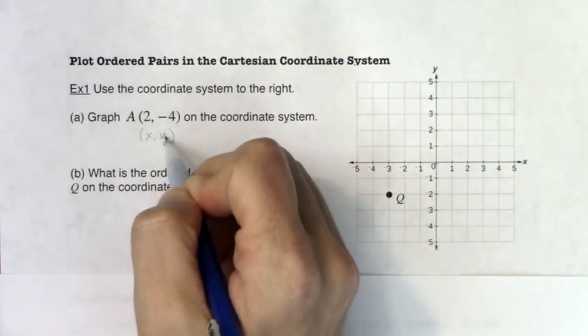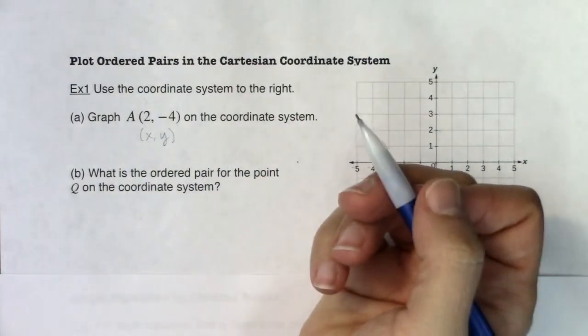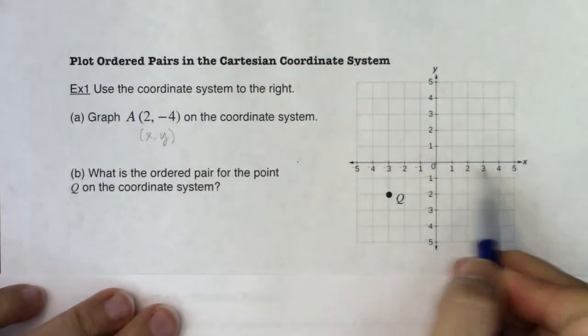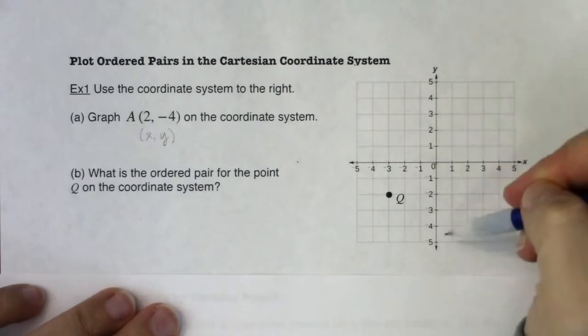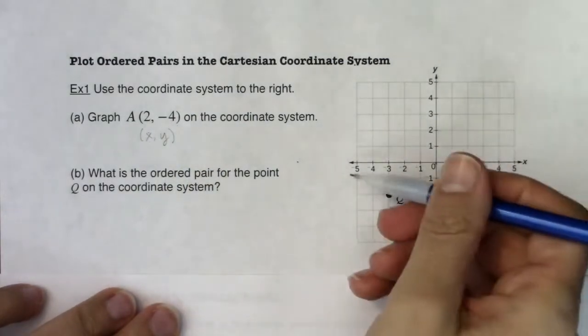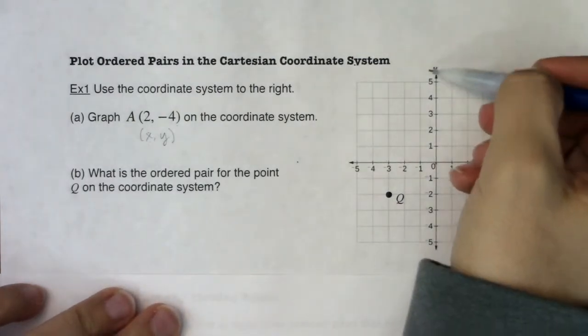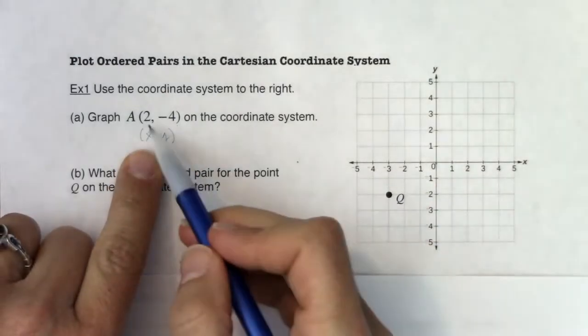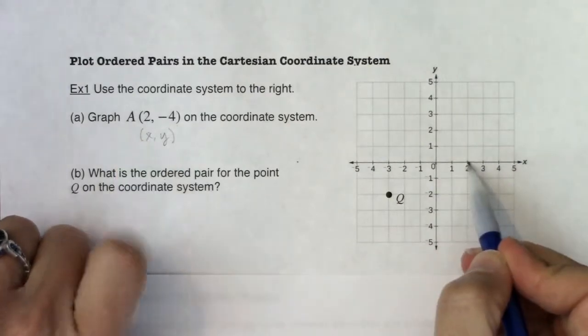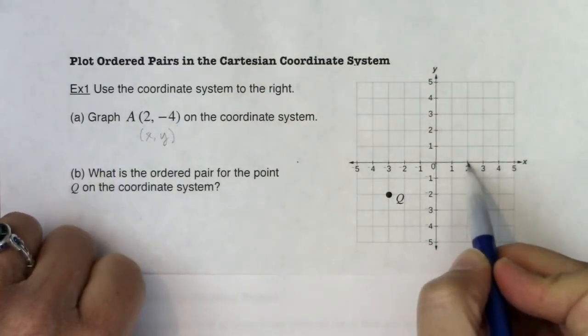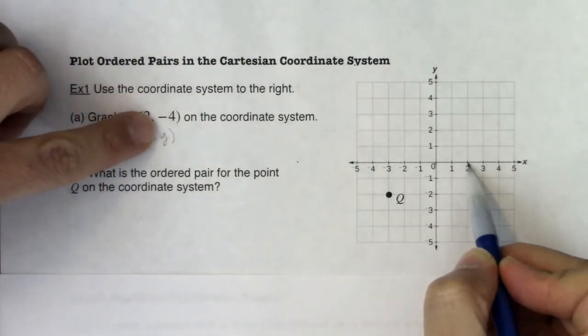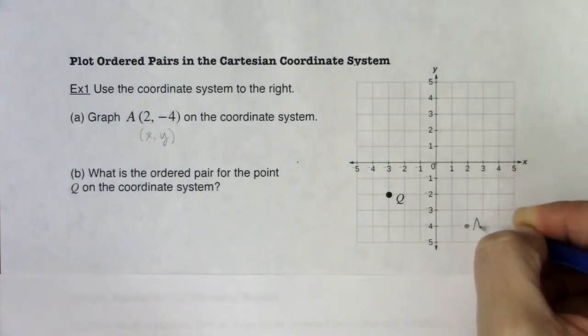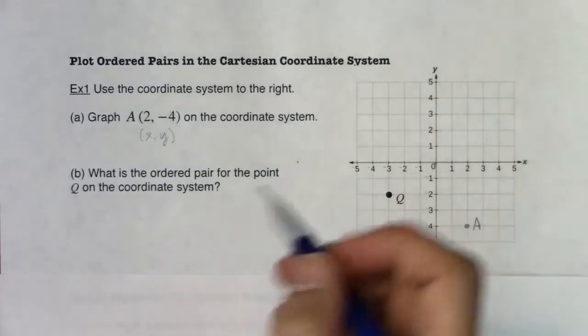So as I look at this, my x coordinate is 2. So x's always move you left, right. y's always move you up, down. And when your x is positive, you move right. X is negative, you move left. If y is positive, you move up. If y is negative, you move down. And those are your four directions. So let's take a look at how we're going to move. It says x is 2, positive 2. So I'm going to move to the right by 2. So you see, from my origin, I went 1, 2 units to the right. Now my y coordinate is -4. y's move me up, down. So I'm going to move down 4. 1, 2, 3, 4. And there is ordered pair A.